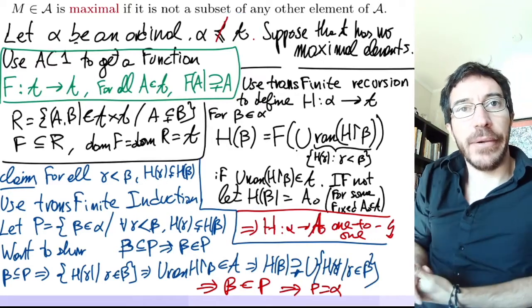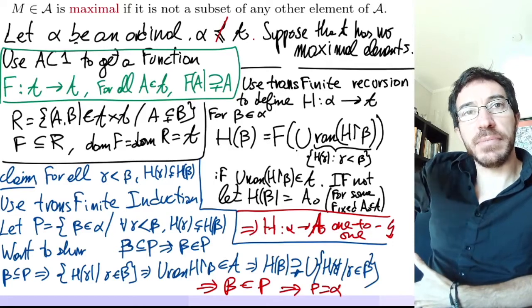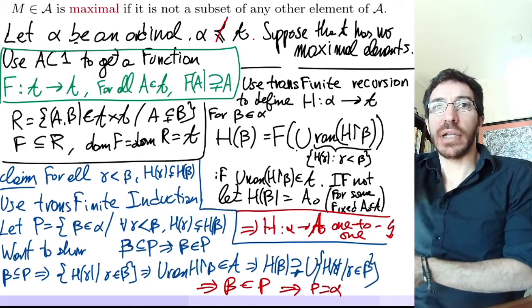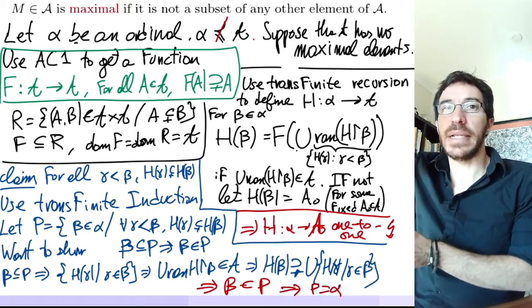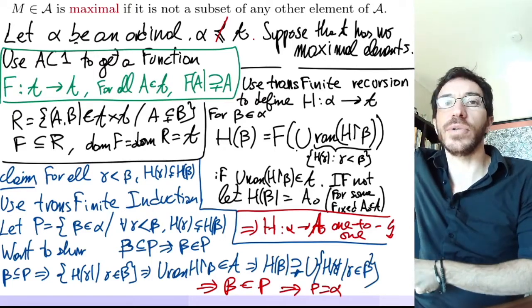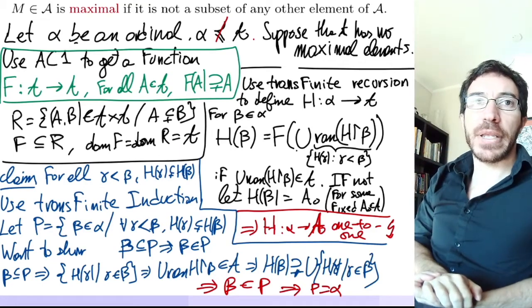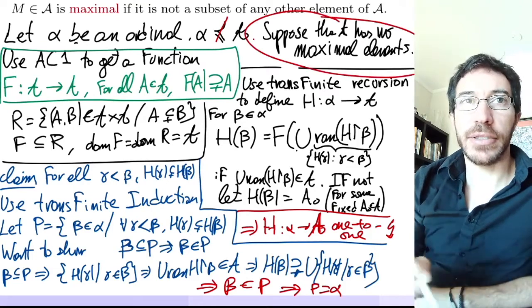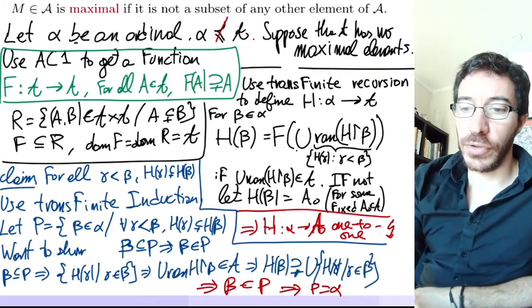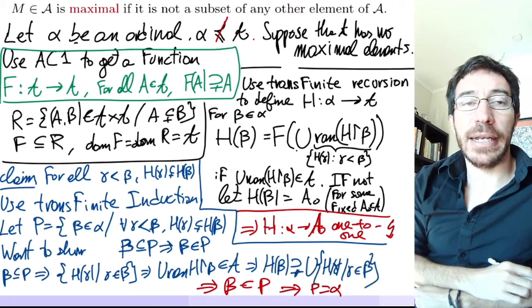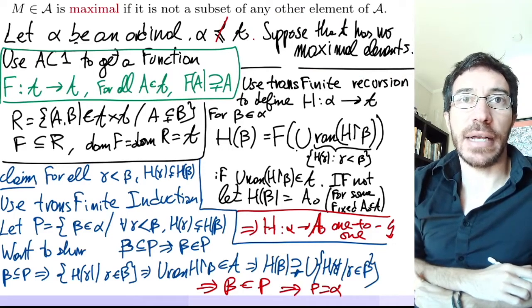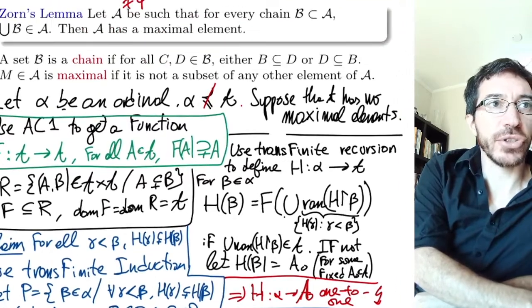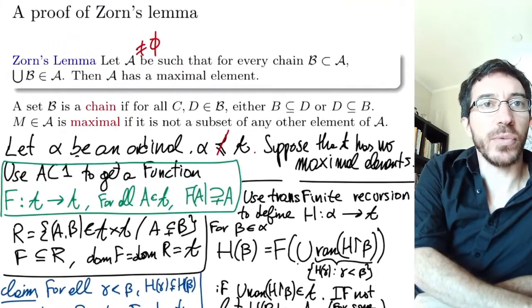So that's the proof. At every point we were choosing something bigger and bigger. If you have a limit ordinal — one that comes after infinitely many steps — just take the union and keep going up. So it's not possible to suppose that A has no maximal element, because if you do, you can build this chain of size alpha, which is not possible. That's our proof of Zorn's Lemma using Axiom of Choice part one.